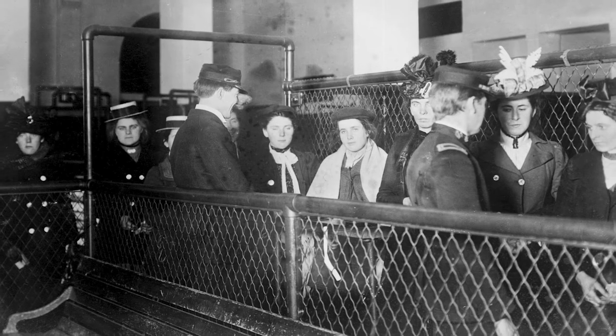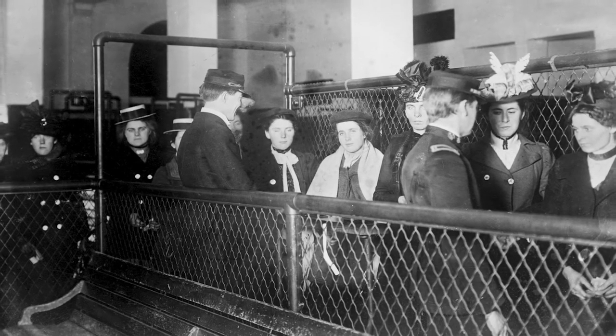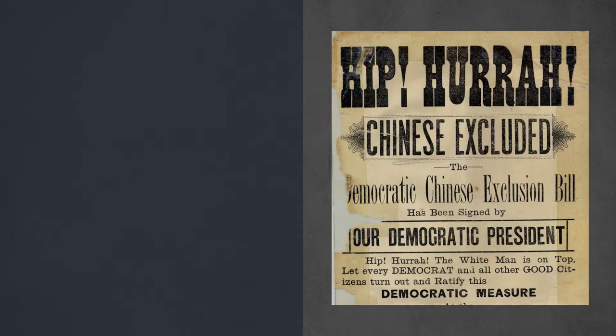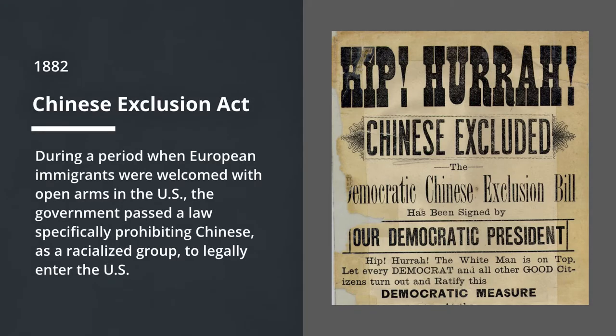While the United States embraced European immigration with open arms, at the same time the government passed a law specifically prohibiting Chinese as a racialized group from legally entering the United States. We see this anti-Chinese hysteria depicted in an image where Democrats are proclaiming that the white man is on top and is good for the country. This continues to the present, where we see with the coronavirus the former administration blaming everything on the Chinese and creating anti-Chinese sentiment. So this is not something of the past — this is also something of the present.